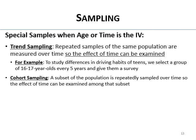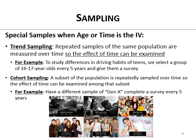Cohort sampling is when some subset of the population is repeatedly sampled over time so the effect of time can be examined among that subset. In trend sampling you used different 16-to-17-year-olds; with cohort sampling you use folks from the same cohort repeatedly measured over time. For example, you could have different samples of Gen Xers complete a survey every five years, looking at changes in how the Gen X generation views things over time.